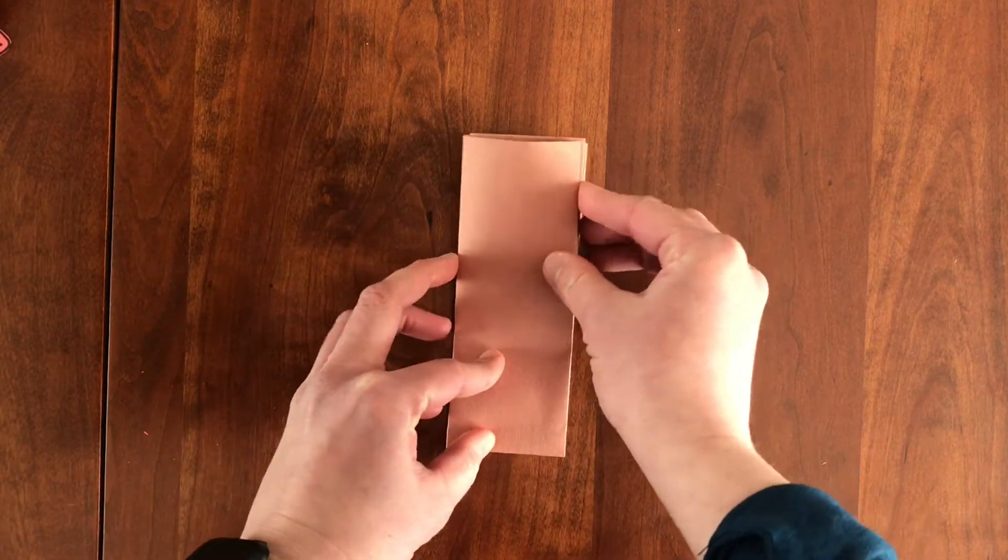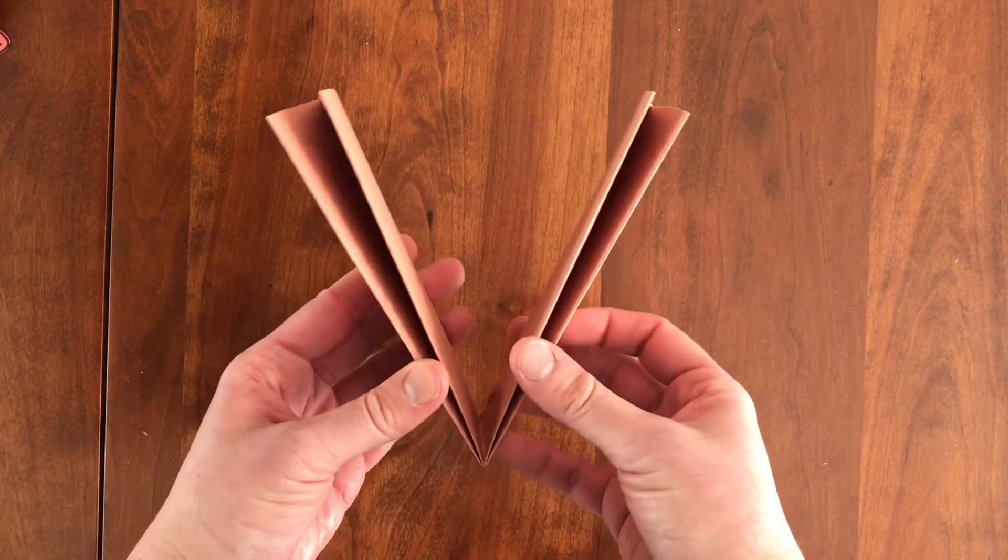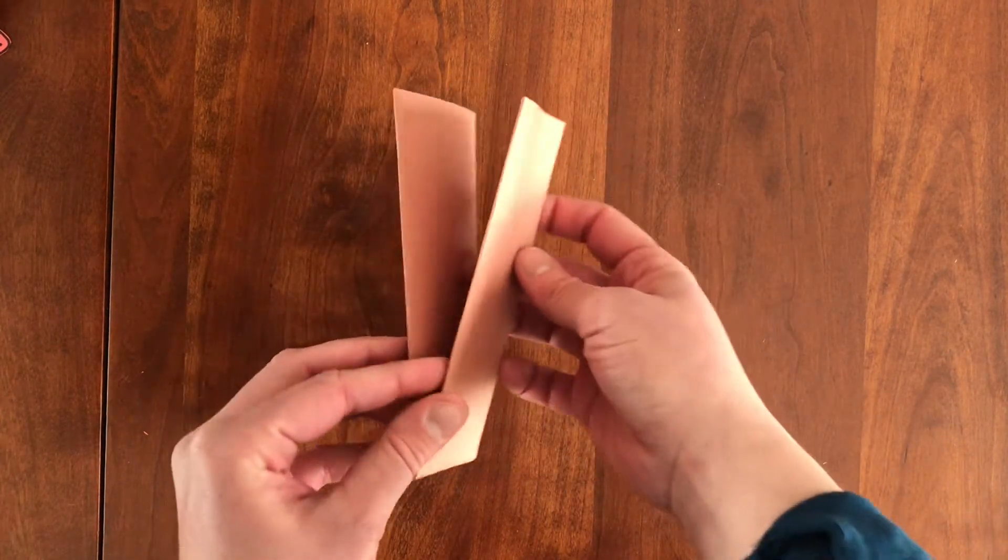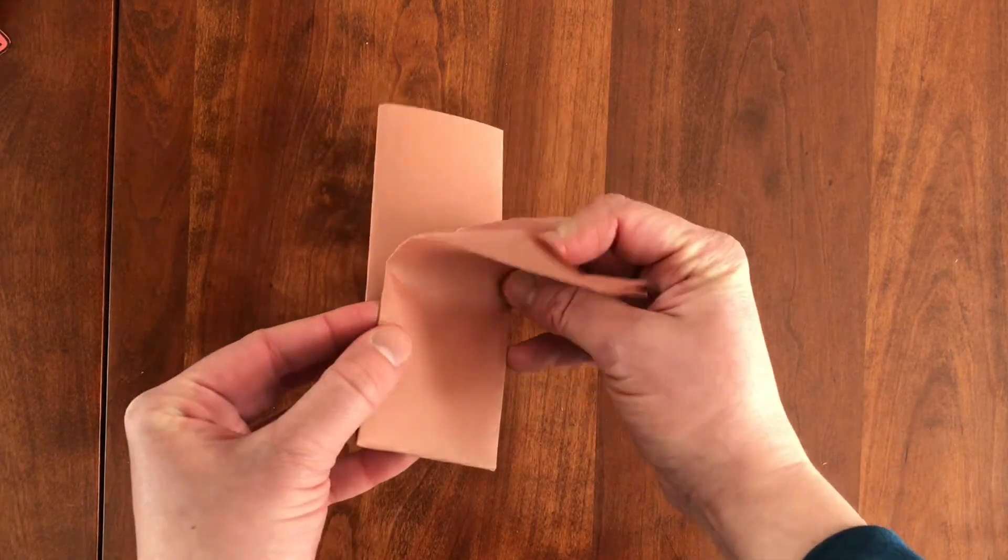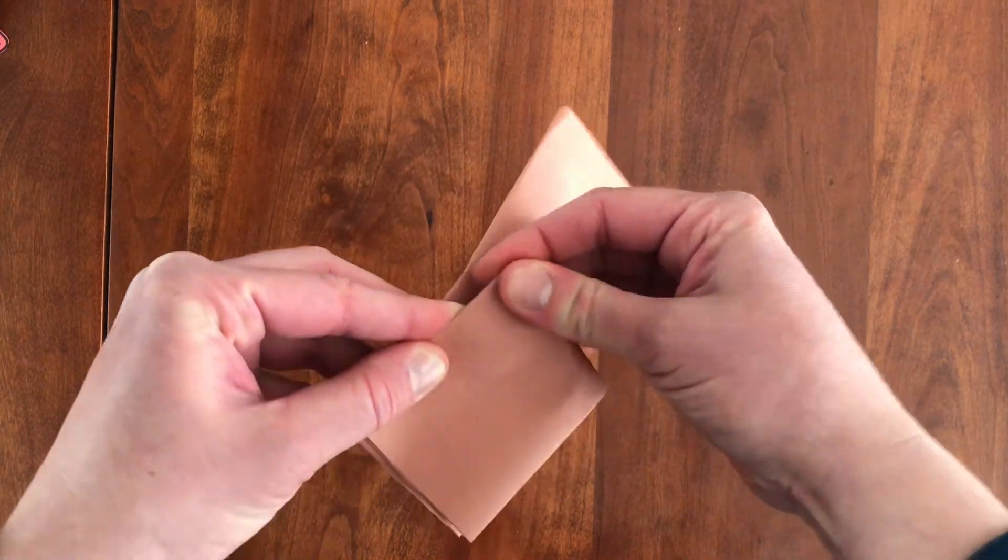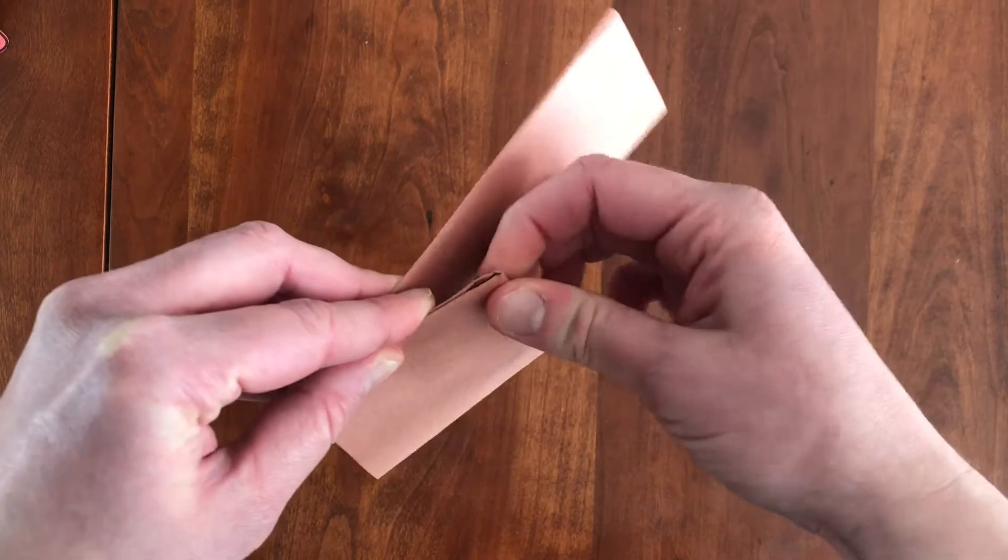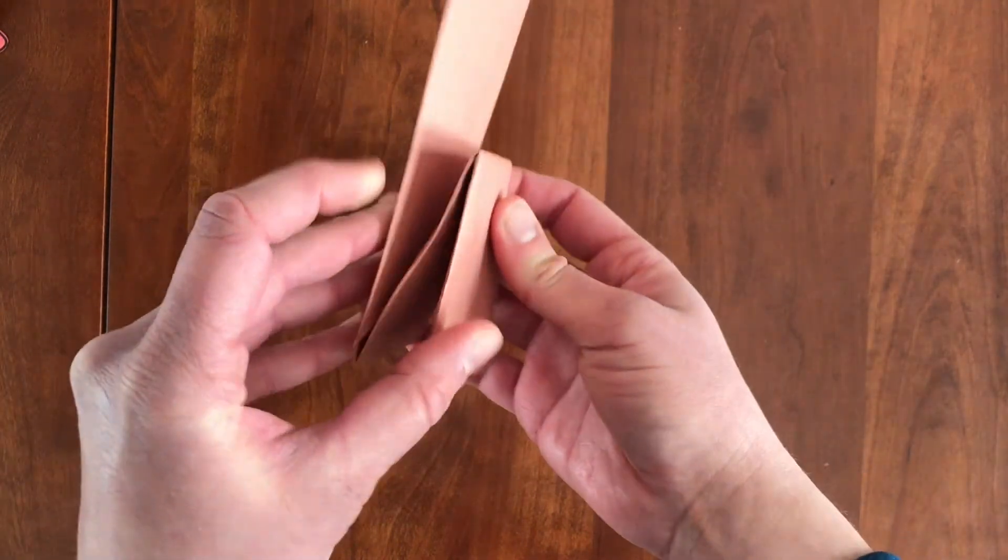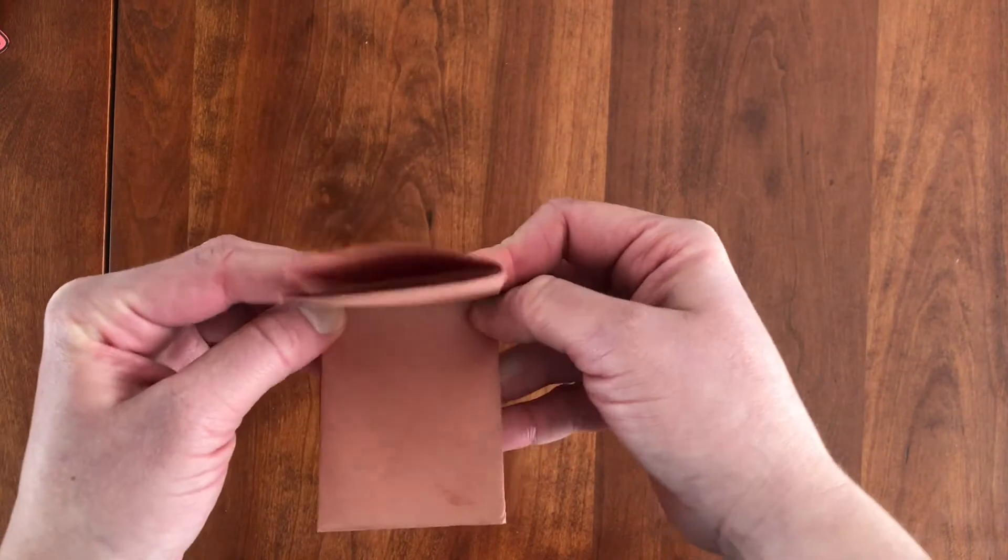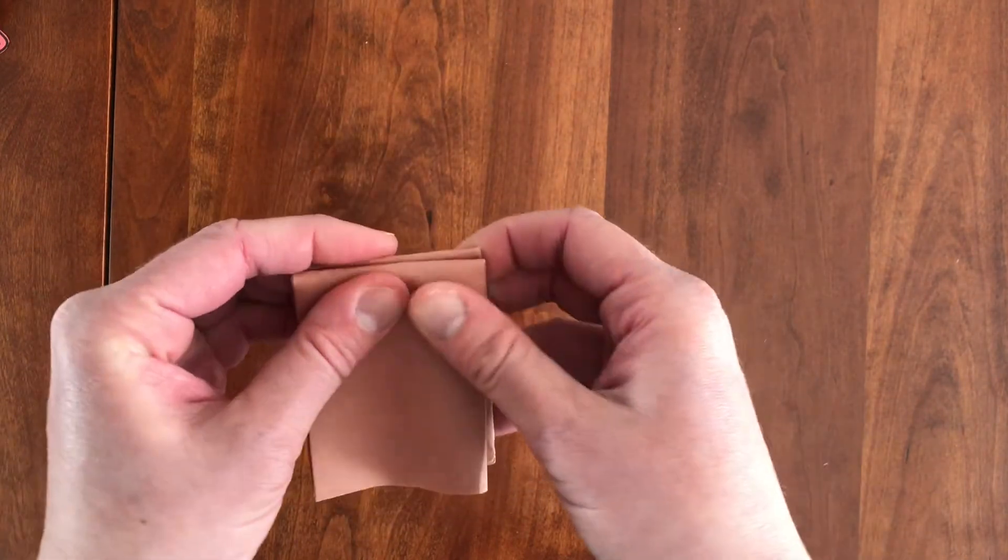Then you can take, so now you have kind of like a V shape, right? Then you can take this top part and you're going to fold it down and these are going to be the holes where you put your fingers. So you fold it down, do the same to the other side, fold it down.